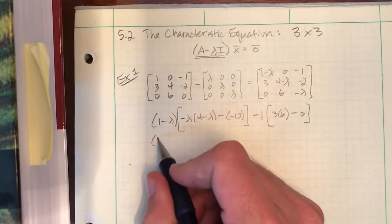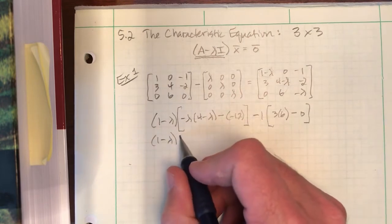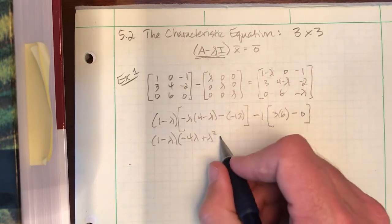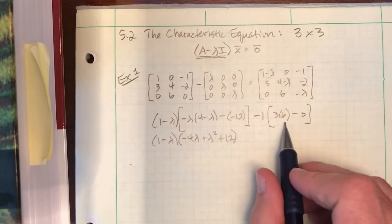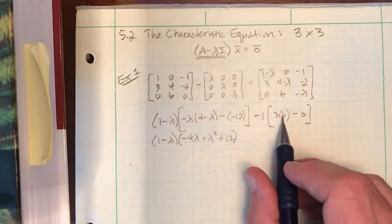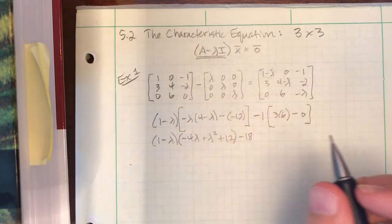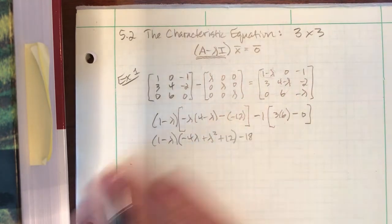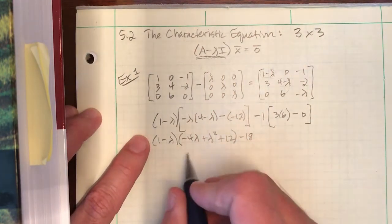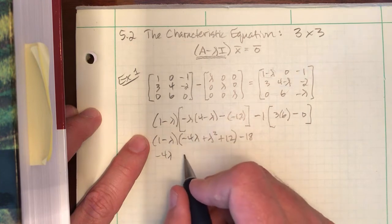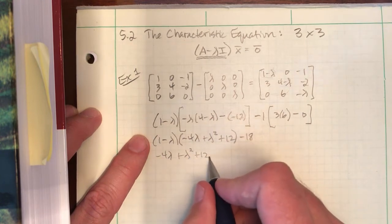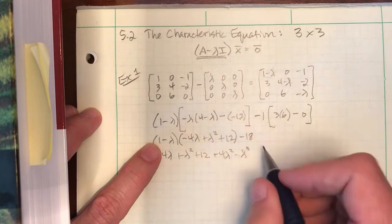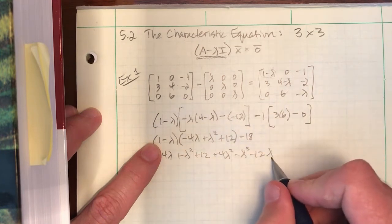So let's start cleaning this up. Let me leave this binomial out in front. And what do we have here? Negative 4 lambda plus lambda squared plus 12. This is just 18, so minus 1 times 18, negative 18. So it looks like we need to distribute these two next, ignoring the negative 18. So here comes 1 times each of those: negative 4 lambda, lambda squared, 12. Negative lambda times each: lambda squared minus lambda cubed minus 12 lambda minus 18.